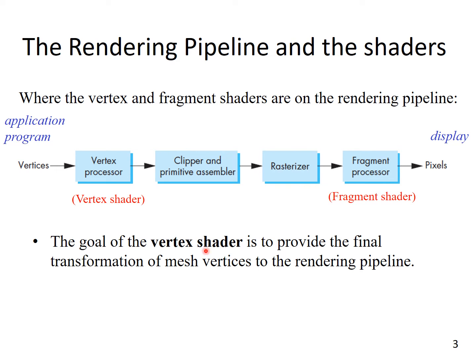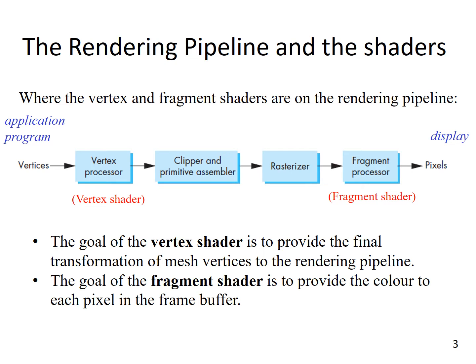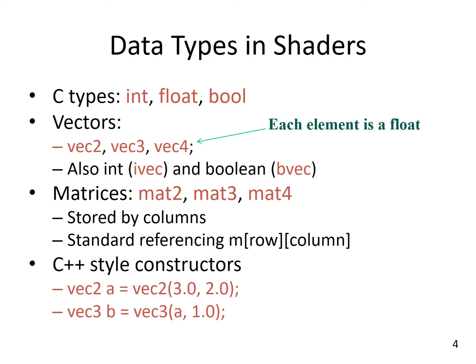The goal of the vertex shader is to provide the final transformation of mesh vertices to the rendering pipeline, where the 3D information is still preserved. The goal of the fragment shader is to provide the color to each pixel, and decide which pixels get displayed and at which location of the screen. When writing the vertex shader and fragment shader programs, we are writing programs to control the vertex processor and the fragment processor respectively.